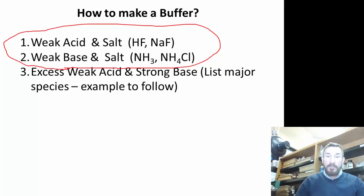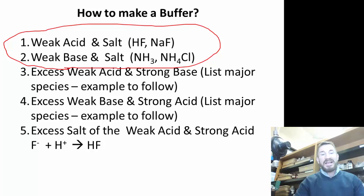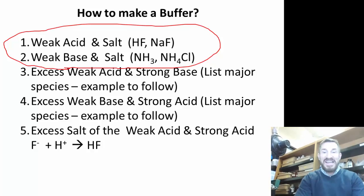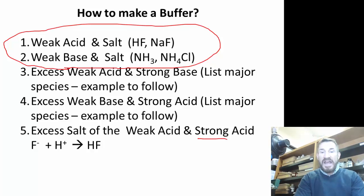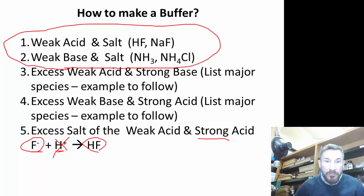We're going to add excess weak acid and strong base. We're going to list the major species and show you how this works. Then we're also going to do another example - excess weak base and strong acid. The next one is excess salt of the weak acid and the strong acid.